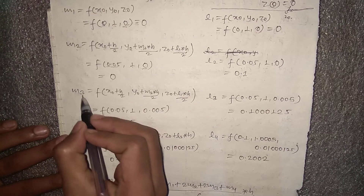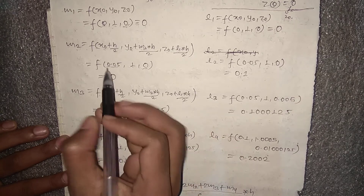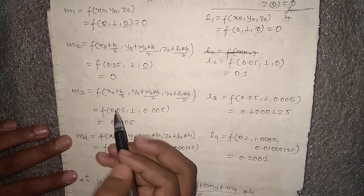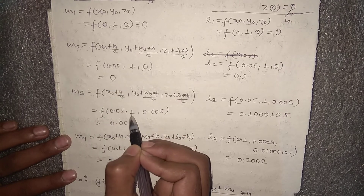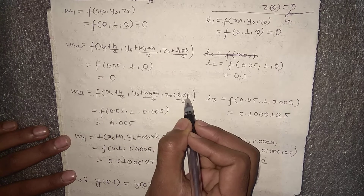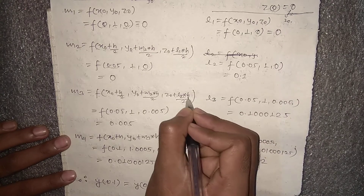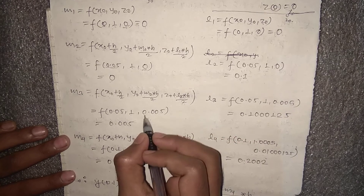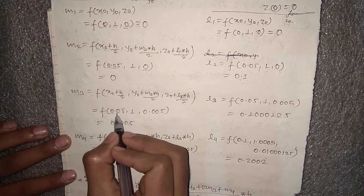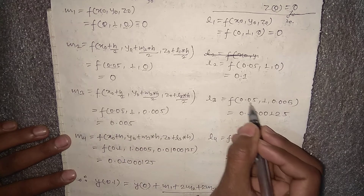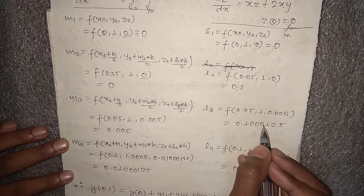For m3 = f(x₀ + h/2, y₀ + m2·h/2, z₀ + l2·h/2): x₀ + h/2 = 0.05; y₀ + m2·h/2 = 1 + 0 = 1; z₀ + l2·h/2 = 0 + 0.1 × 0.05 = 0.005. So m3 = 0. For l3, with values (0.05, 1, 0.005), substituting into the function gives l3 = 0.100125.